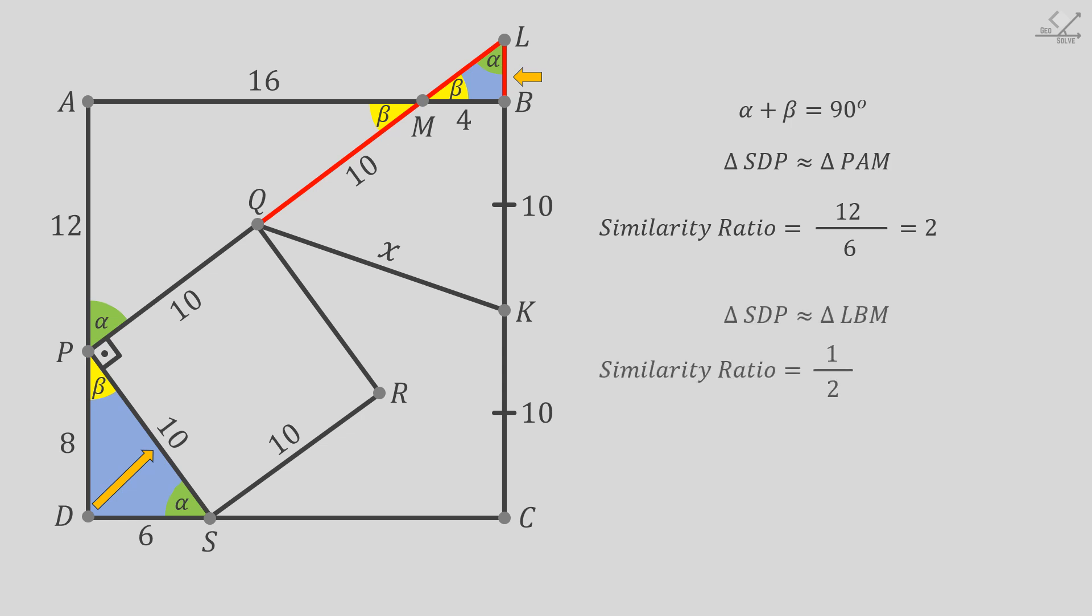The similarity ratio of these two blue triangles is 1 over 2, so the missing sides of the upper triangle will be 3 and 5.